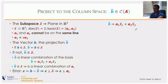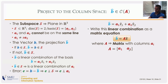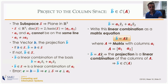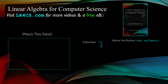Writing b-hat as a linear combination of a1 and a2 with scalars x1-hat and x2-hat, we can express this as a matrix equation. If we put a1 and a2 as the columns of matrix A, and x1-hat and x2-hat as the vector x-hat, we get our equation: b-hat = A·x-hat. Here A is the matrix of basis columns, and b-hat is the projection — a linear combination of the columns of A. This means b-hat is guaranteed to be in the column space of A.